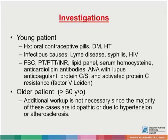Investigations are indicated in young patients. In the history, ask about oral contraceptive use, diabetes mellitus, or hypertension. Investigate for infectious causes such as Lyme disease, syphilis, and HIV. Perform the following blood investigations: full blood count, PT, PTT, and INR, lipid panel, serum homocysteine, anti-cardiolipin antibodies, anti-nuclear antibody with lupus anticoagulant, protein C and S, as well as activated protein C resistance. Older patients more than 60 years old may not require additional workup, since the majority of these cases are idiopathic or due to hypertension or arteriosclerosis.